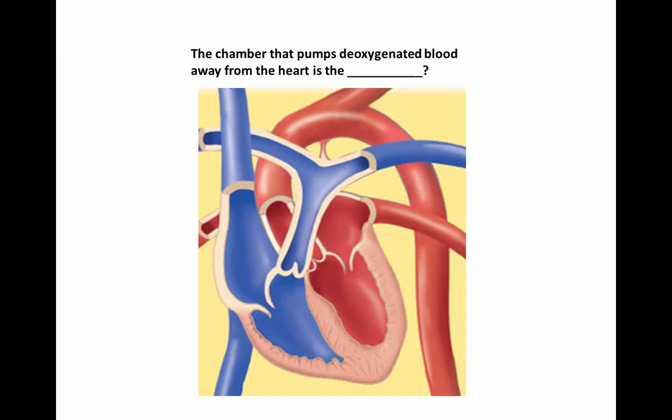Let's try this question: the chamber that pumps deoxygenated blood is which? First, what type of blood? It's deoxygenated — that's the right side. Second, what type of chamber? It says pumping — those are ventricles. So the chamber that pumps deoxygenated blood must be the right ventricle.